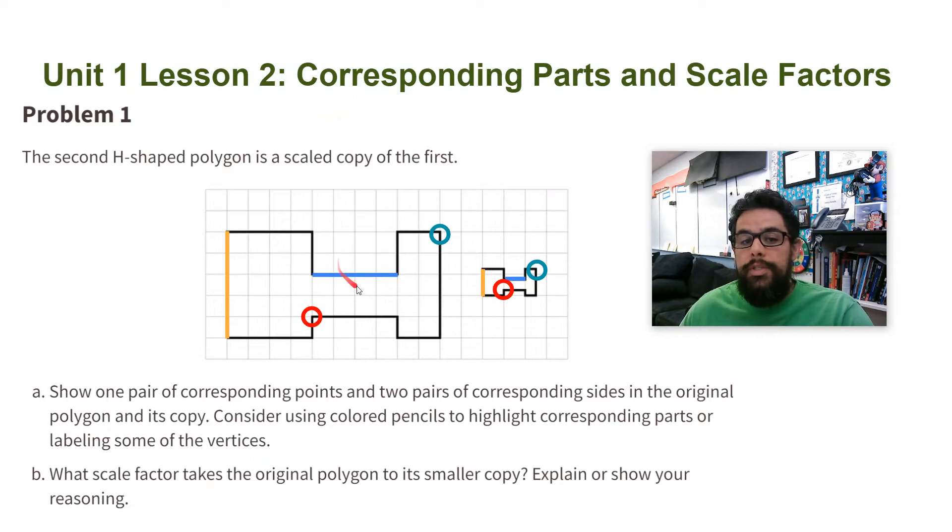This side right here is four units. I multiply by the scale factor and it gets me one. So that's what I wrote here in this equation: 4 times the scale factor equals 1. Because it's getting smaller, the scale factor is not going to be a whole number. It's going to be a fraction that is less than one.